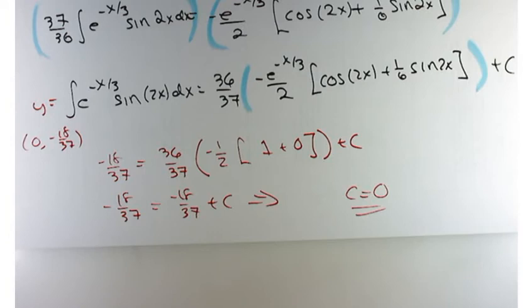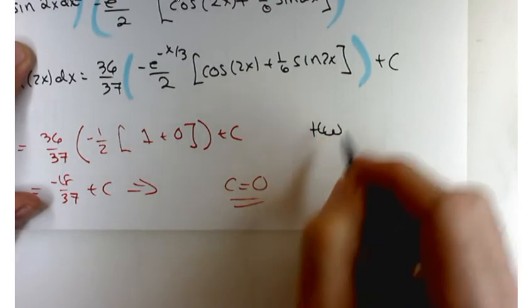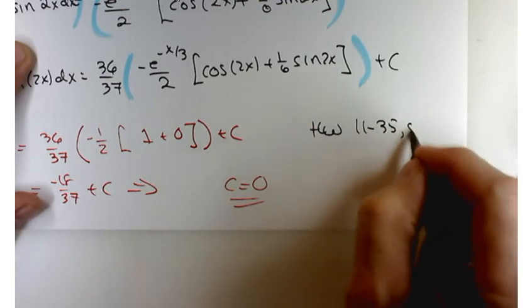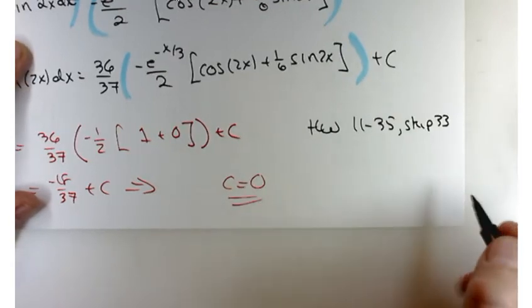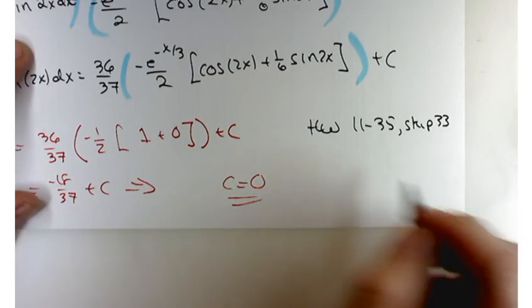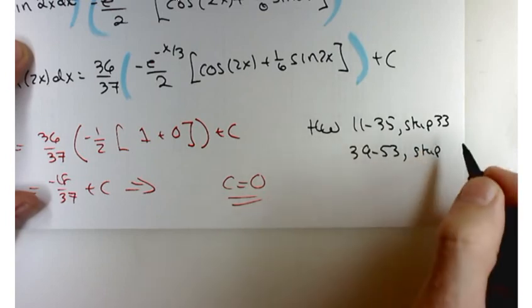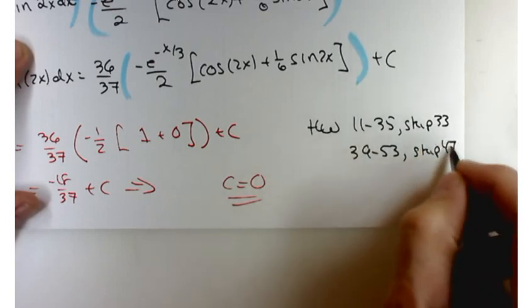I'm going to kill the video here, and then give you a couple problems to work on. So, oh, yeah. I should give you some homework, too. Just let me do that. So, for homework, try 11 through 35. You can skip 33. And then 39 through 53, you can skip 47.